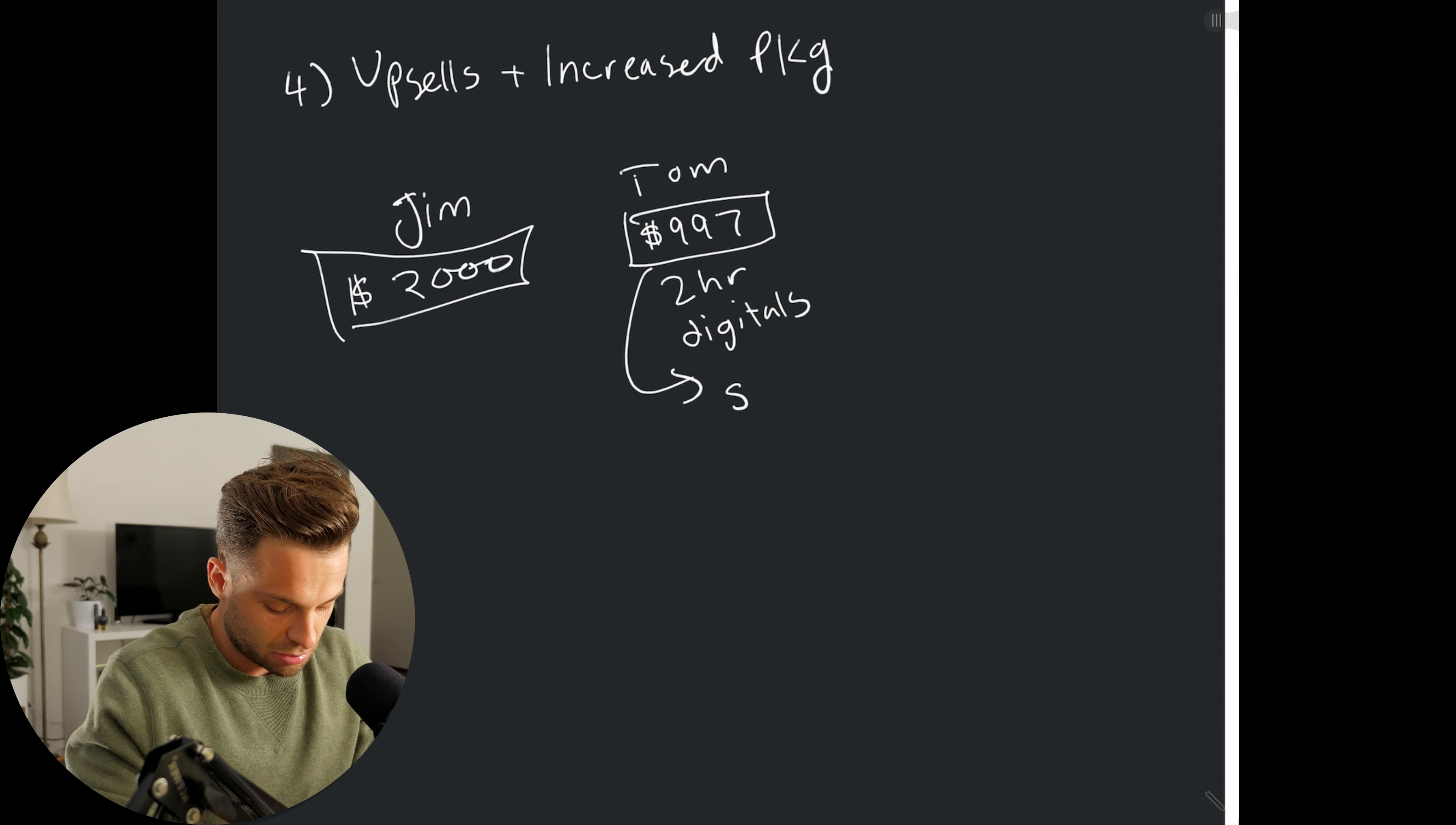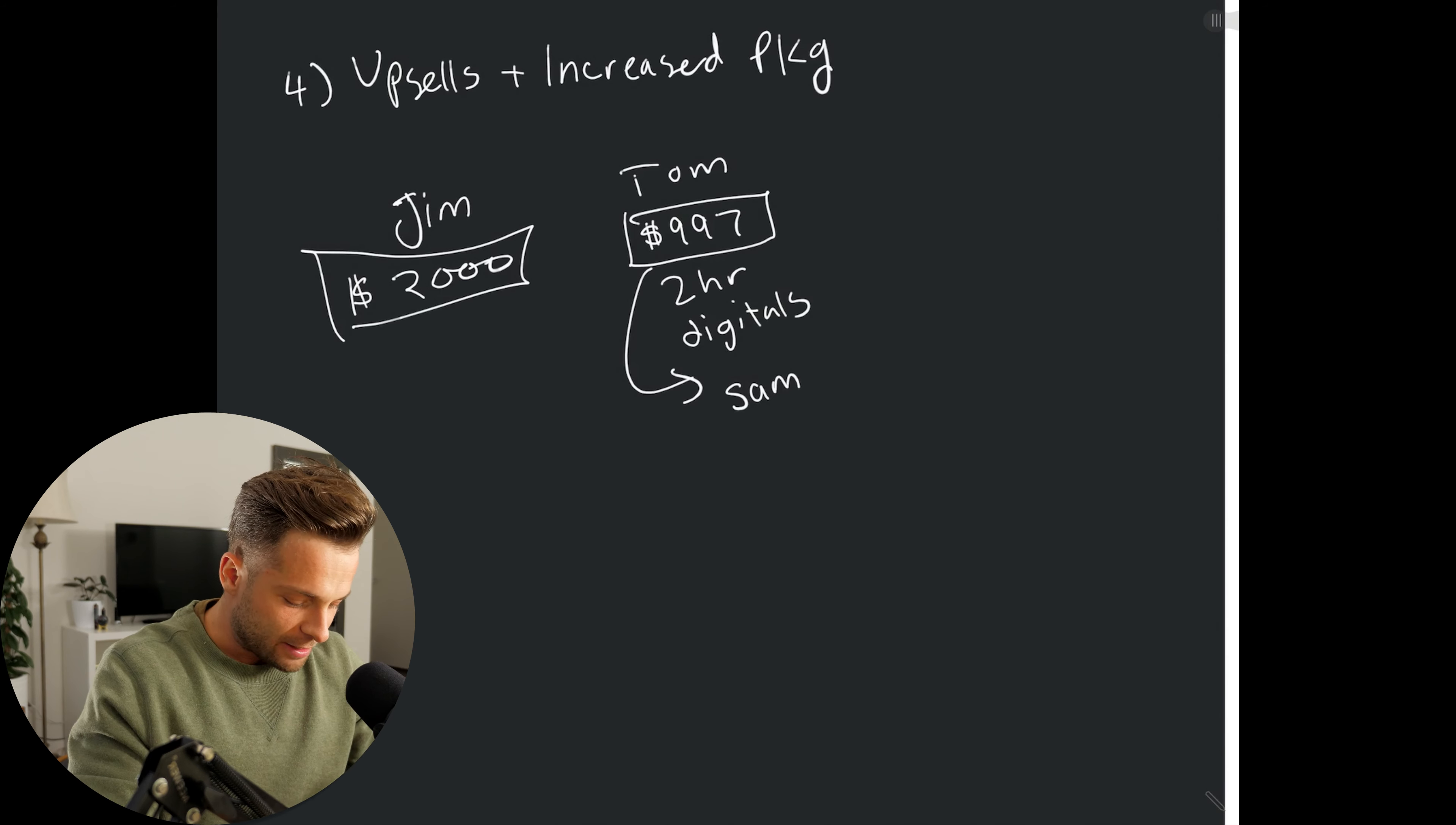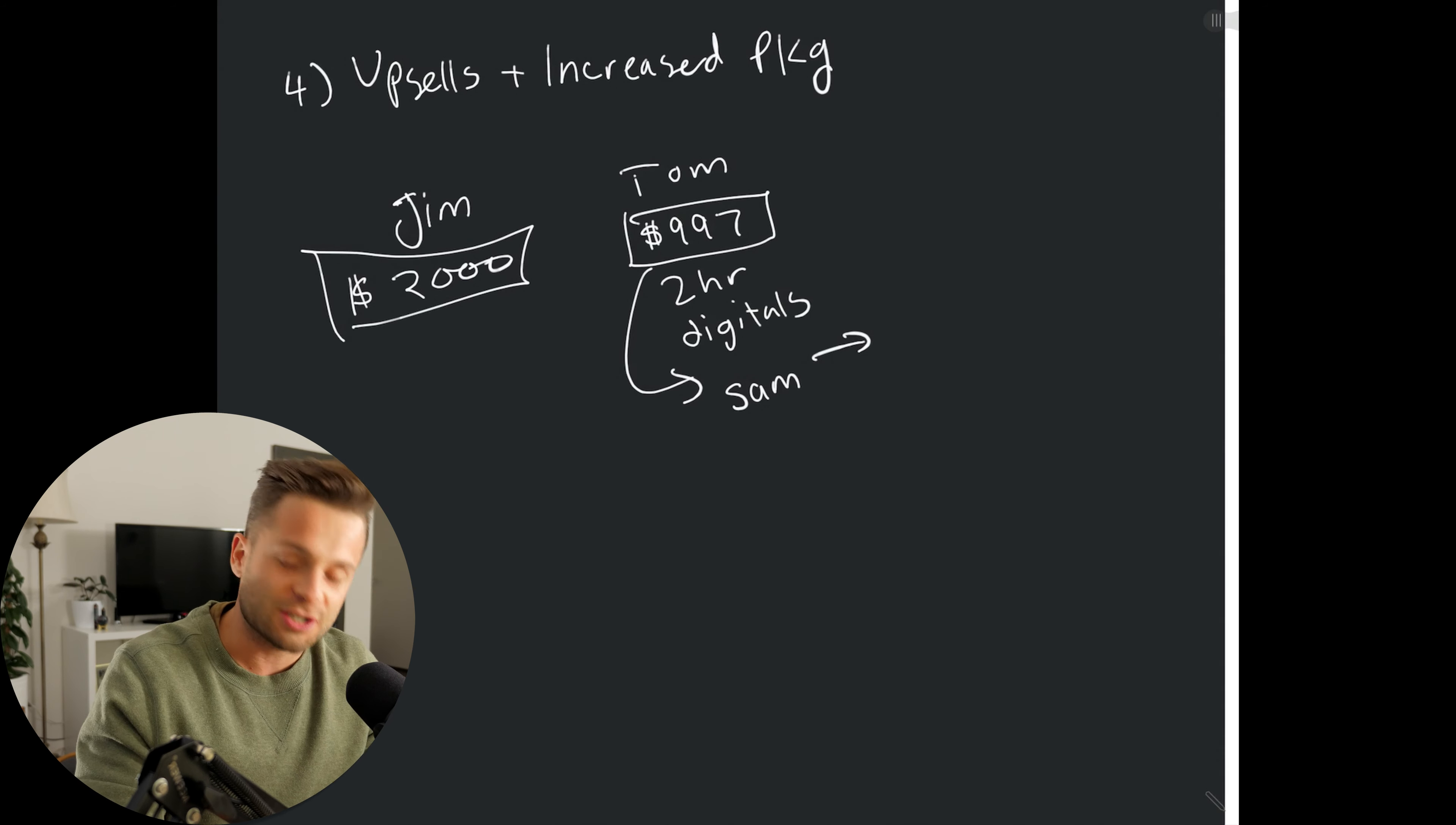And then Tom books his client, Sam, or Cindy, or whoever it is, and Sam says, okay, great, I'm going to book with you. Tom sits down. It's about a month before the session. He sits down, he sends her an email, and he says, Sam, I have booked you for the $9.97 package, but I actually have an amazing deal with this album company that they're 40% off right now. Normally, I'd have to charge you an extra $2,000 to include this album, but right now, I can afford to do it for $1,000. Would you like to add that to your package?